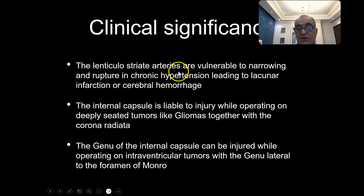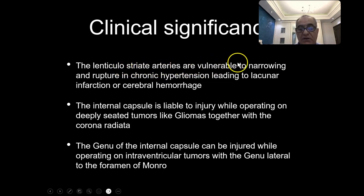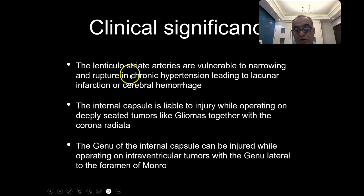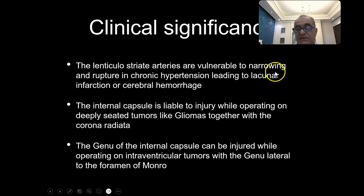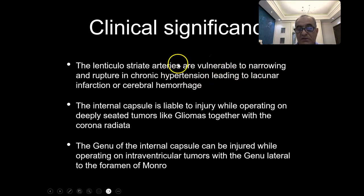The internal capsule is a very common site for infarctions and hemorrhage because it is supplied by branches of the lenticulostriate arteries — the medial lenticulostriate arteries from the anterior cerebral and the lateral lenticulostriate arteries from the middle cerebral artery. In chronic hypertension, these vessels are liable to rupture causing cerebral hemorrhage, or they can cause narrowing and thrombosis on top of atherosclerosis, resulting in lacunar infarction — a small infarction of 5–10 mm. Because the fibers are compact in the internal capsule, even a small infarction can result in contralateral hemiplegia.